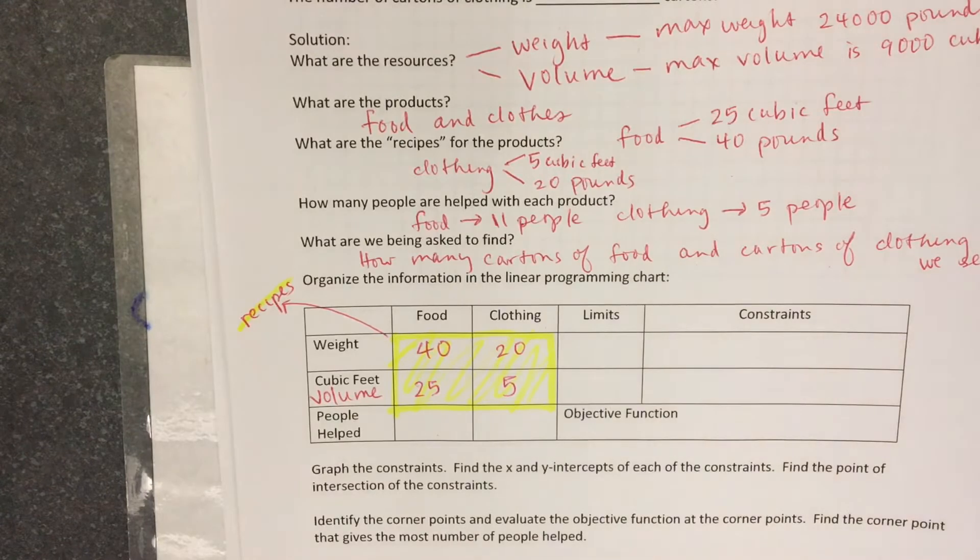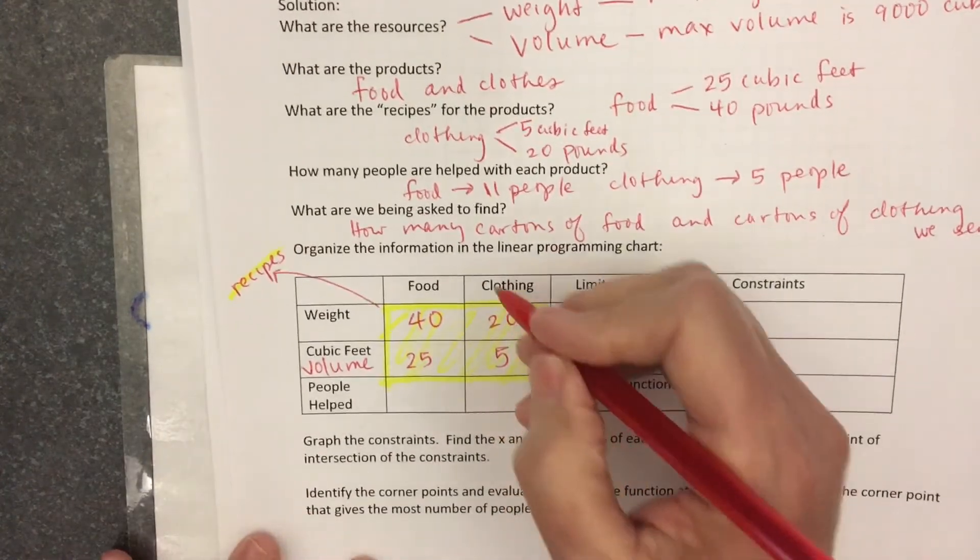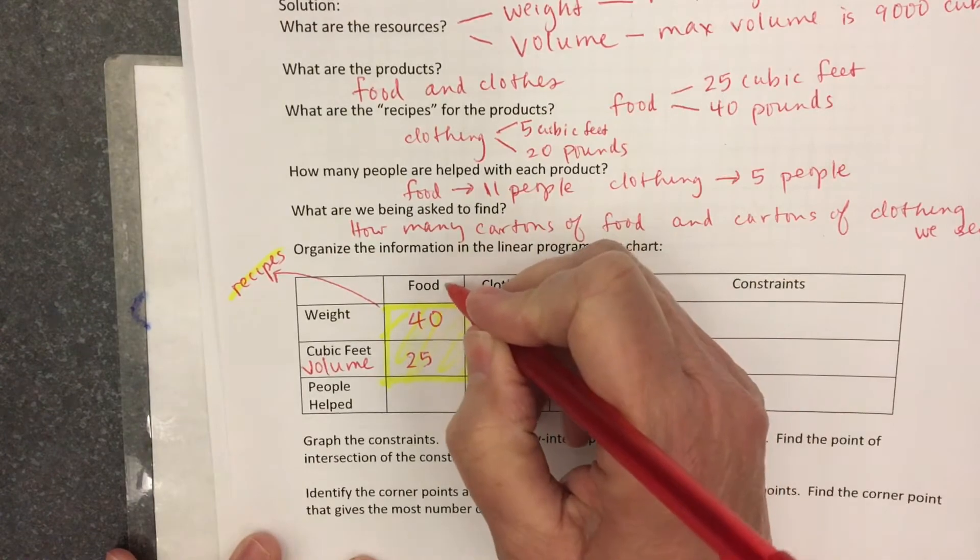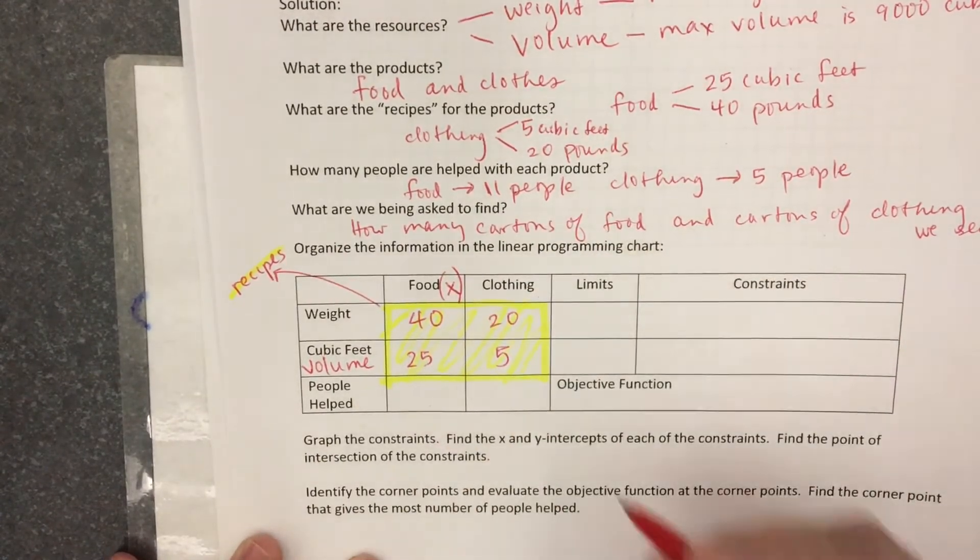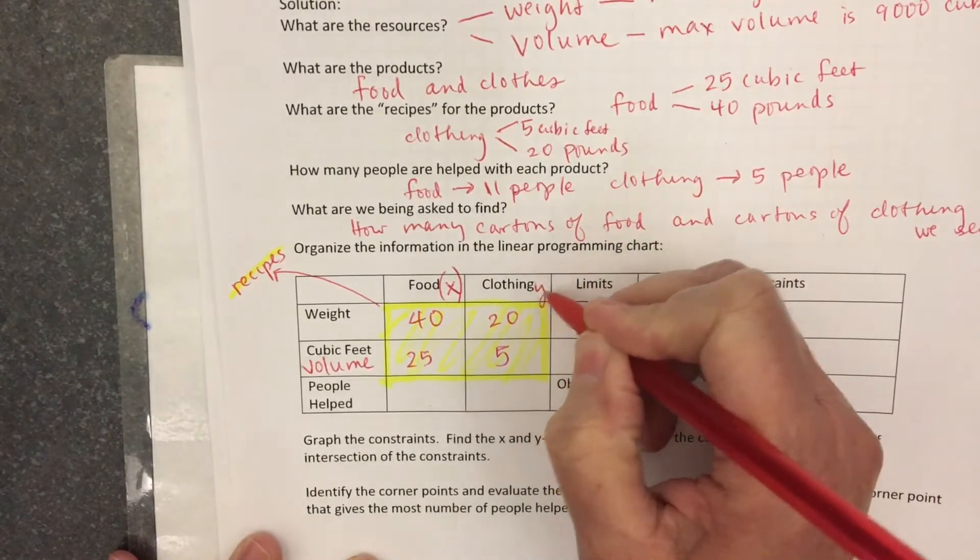Let's send as much as we can, and in fact they're wanting us to find how many cartons of food to send, how many cartons of clothes. Let's let food be X, the number of cartons, and clothing is Y.